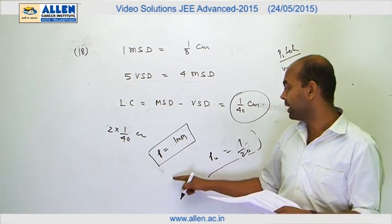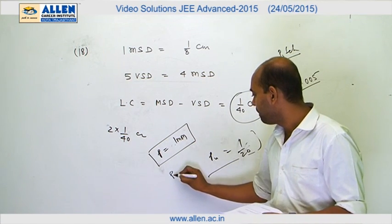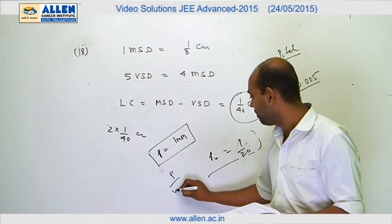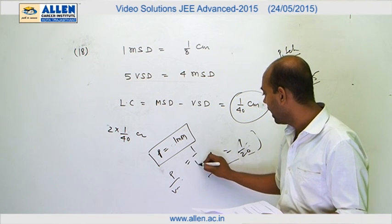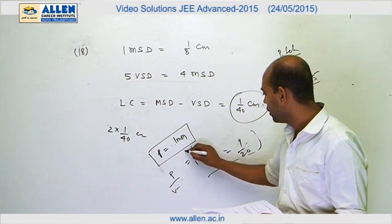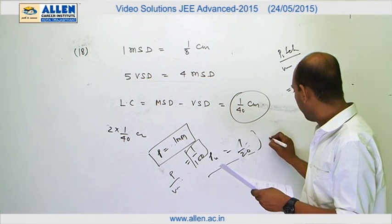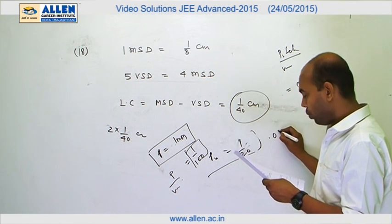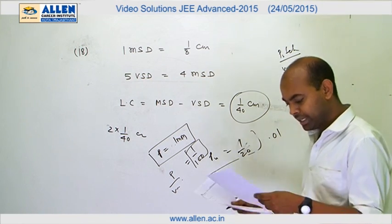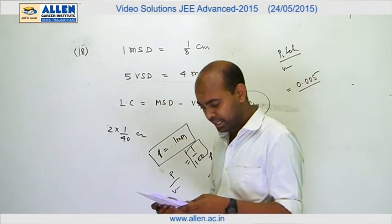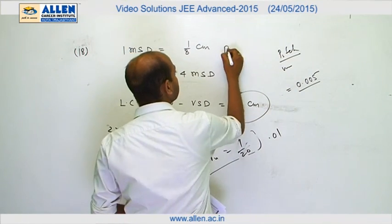In that case, the least count of the screw gauge will be pitch divided by the number of circular scale divisions, which is 1/100, so the answer is 0.01. By this analysis, the answer to question 18 is B and C.